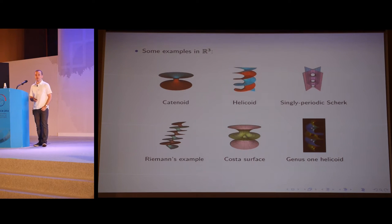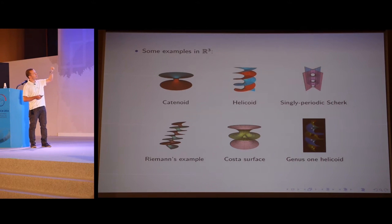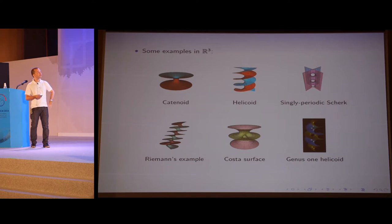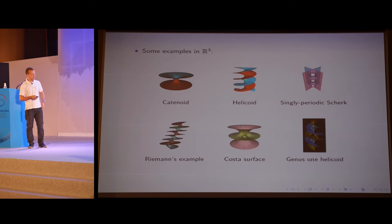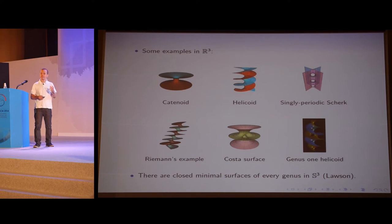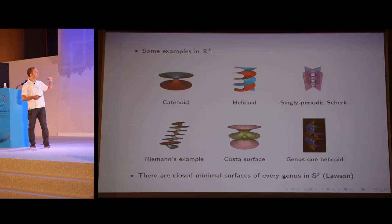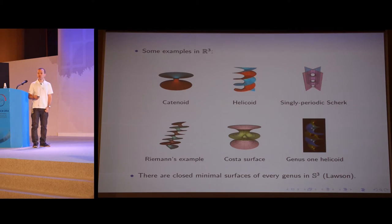It's a very rich theory with lots of beautiful and explicit examples. The first four shown are classical ones; the last two were discovered more recently. In R3, one fact that follows easily from the maximum principle is that one cannot find closed minimal surfaces — there are no closed minimal surfaces in R3. On the other hand, by the pioneering work of Blaine Lawson, one gets the feeling that there should be lots of closed minimal surfaces in compact ambient spaces. In fact, he proved that for the standard S3 with unit radius, there are closed minimal surfaces of every genus.